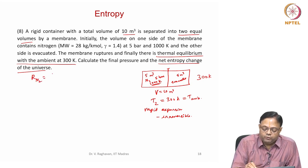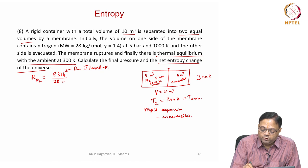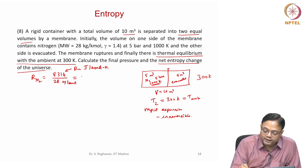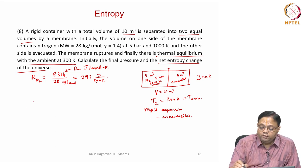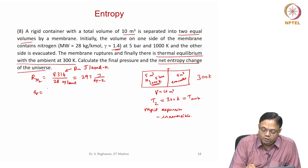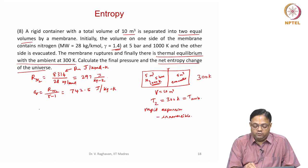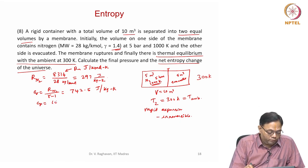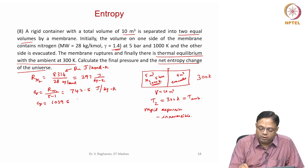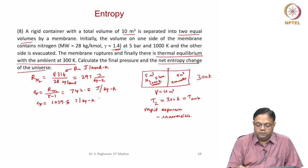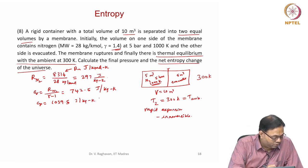R for nitrogen equals 8314 joule per kilo-mole Kelvin, which is the universal gas constant, divided by the molecular weight per kilo-mole. That gives 297 joule per kg Kelvin — the specific gas constant for nitrogen. Since gamma is given, Cv equals R_nitrogen divided by gamma minus 1, which equals 742.5 joule per kg Kelvin. And Cp equals 1039.5 joule per kg Kelvin, that is gamma·R divided by gamma minus 1.